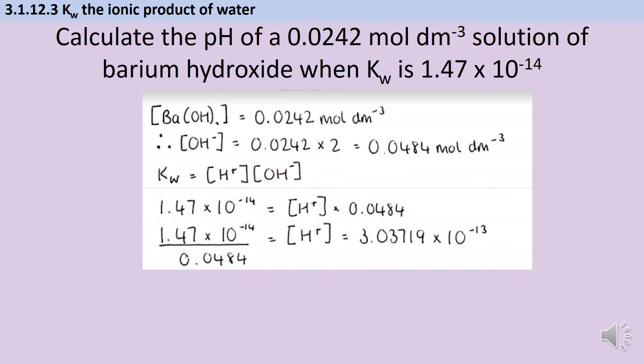By doing this, we can work out that the concentration of hydrogen ions is going to be 3.03719 times 10 to the minus 13.